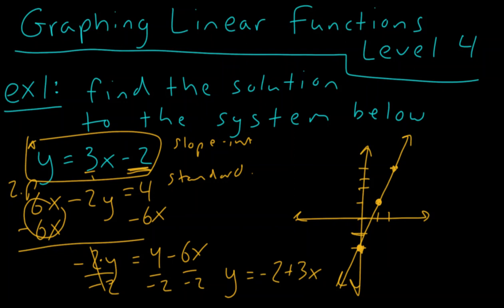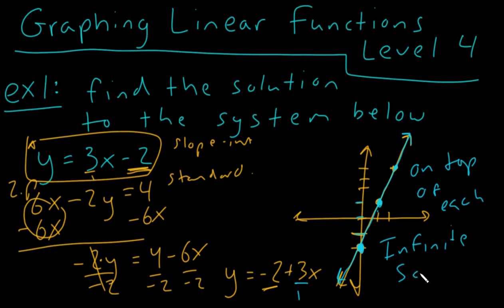Let's graph that. Our y-intercept is negative two, so we go down two units, and our slope is three over one — up three and to the right one. When we graph this, we realize this line is the exact same line as our first line. Whenever two lines are on top of each other, we call this infinite solutions, because these lines wind up touching each other at every single point for infinity.